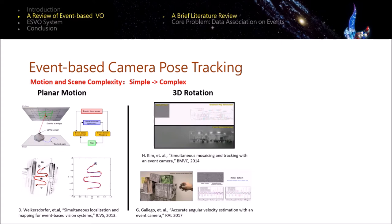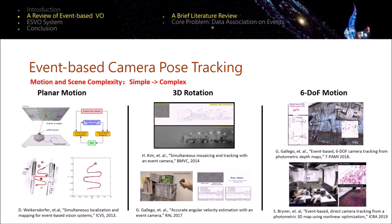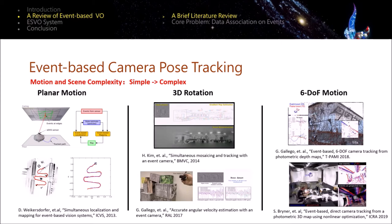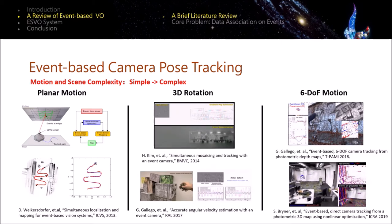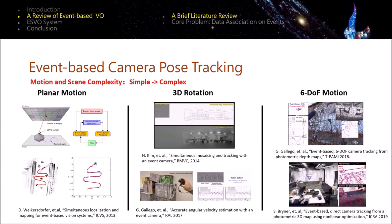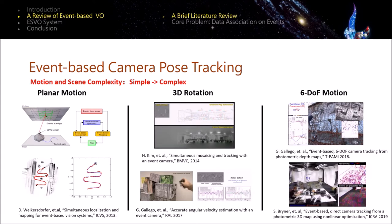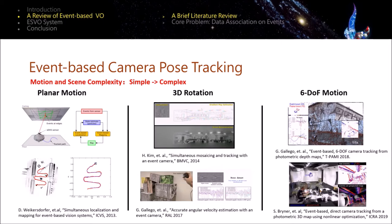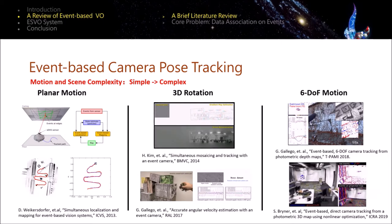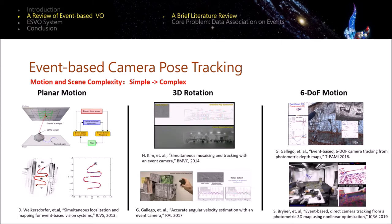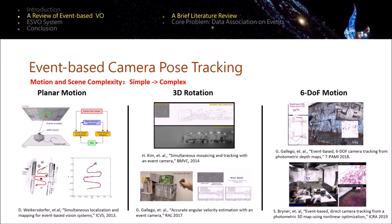The most difficult case is to deal with the full six-degree of freedom motion estimation in a natural scene. Both of the two examples shown here assume that the 3D map of the environment was known a priori and do not need to update. They show that an event-based camera pose tracker can outperform counterparts using standard cameras when dealing with aggressive motions and challenging illumination conditions.